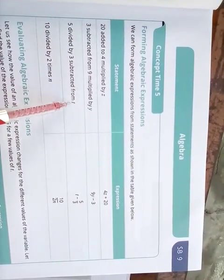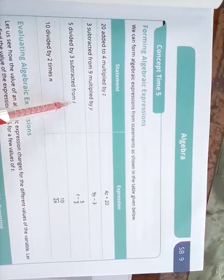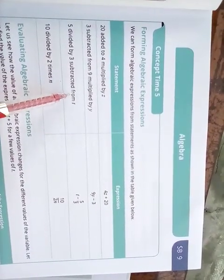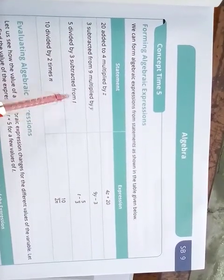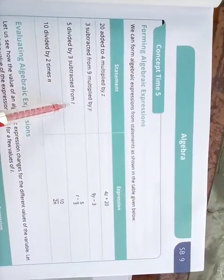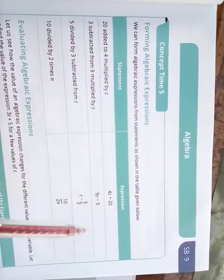5 divided by 3 separated from t. Separated from t means t. First of all, what should be written? We write the t first of all. So t minus 5 divided by 3 means 5 upon 3. So the answer will be t minus 5 upon 3. Clear?